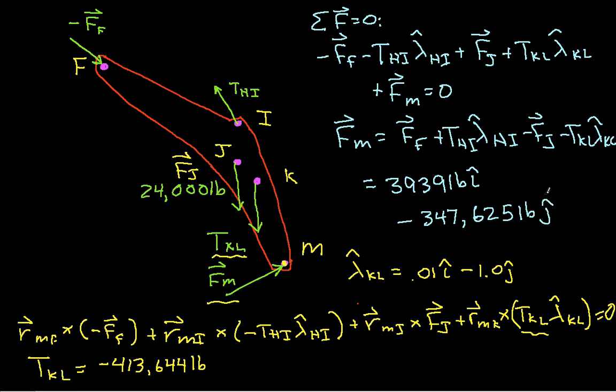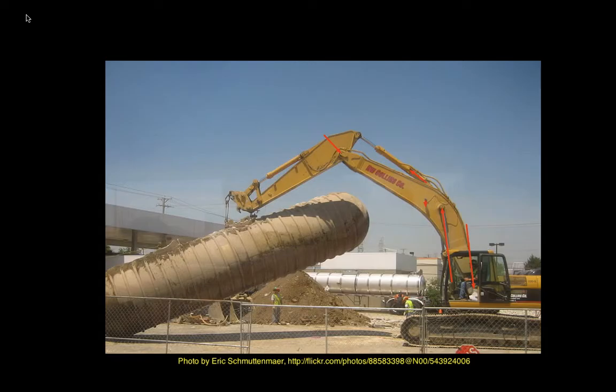Okay, so there we have it. We've got basically the last tension and forces. And so I have drawn these forces on our picture. And you can see then that we have a pretty significant tension. It's actually a compression because the sign was negative for T-K-L.